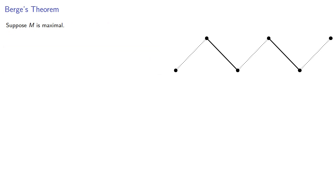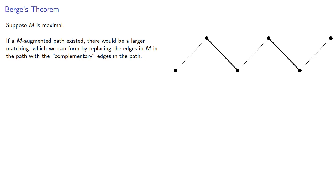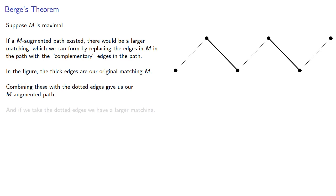So let's prove this. Suppose M is maximal. If an M-augmented path existed, there would be a larger matching, which we could form by replacing the edges in M in the path with the complementary edges. In the picture, the thick edges represent the original matching M. If we combine these with the dotted edges, we get our M-augmented path. And if we take the dotted edges alone, we have a larger matching with three edges instead of two.